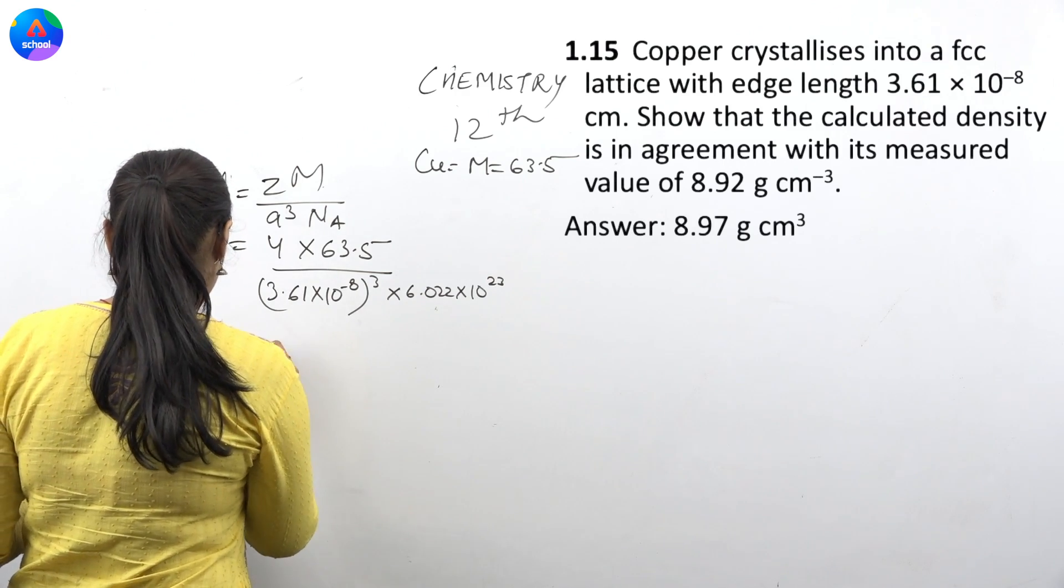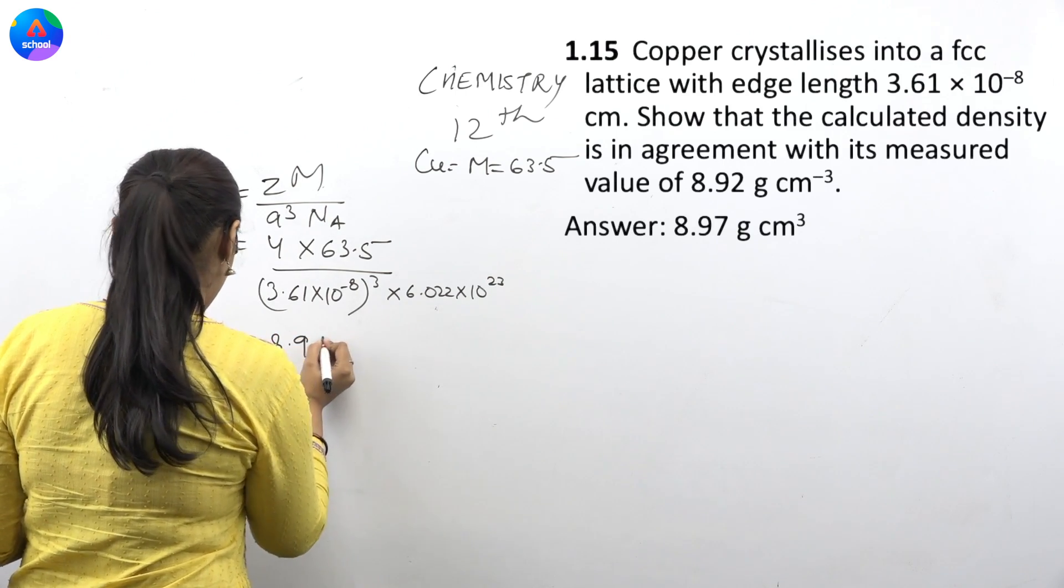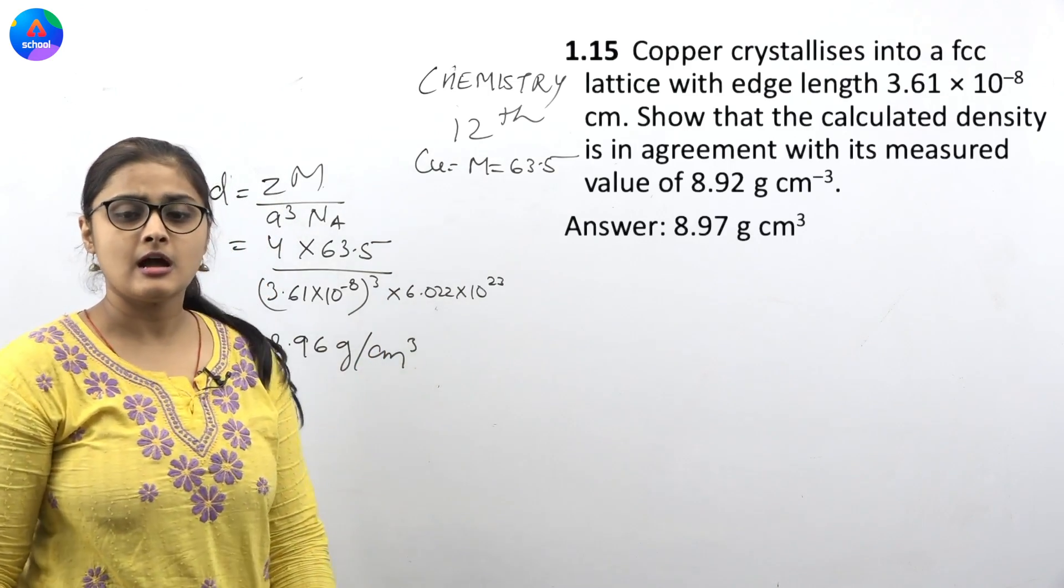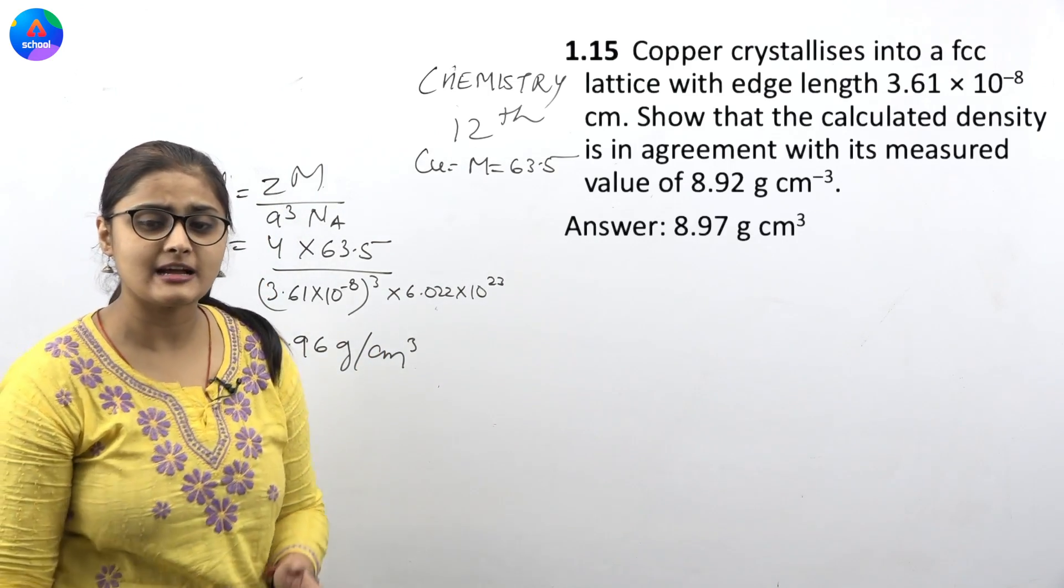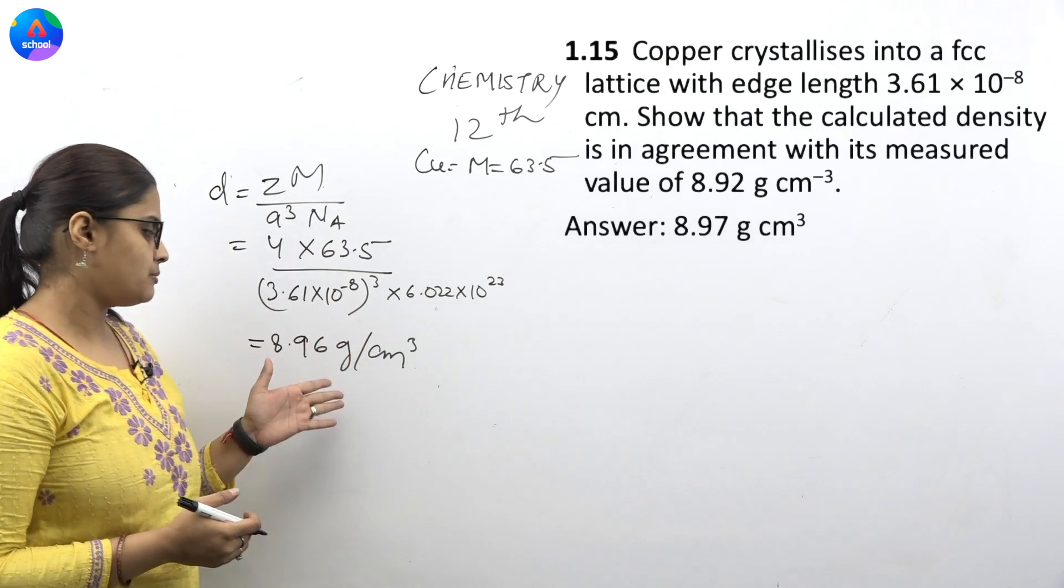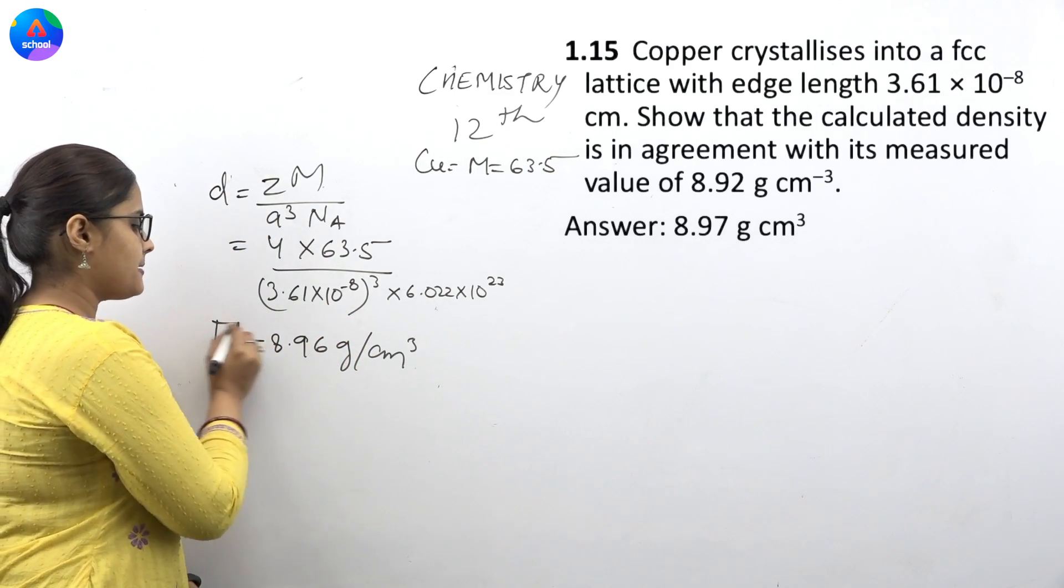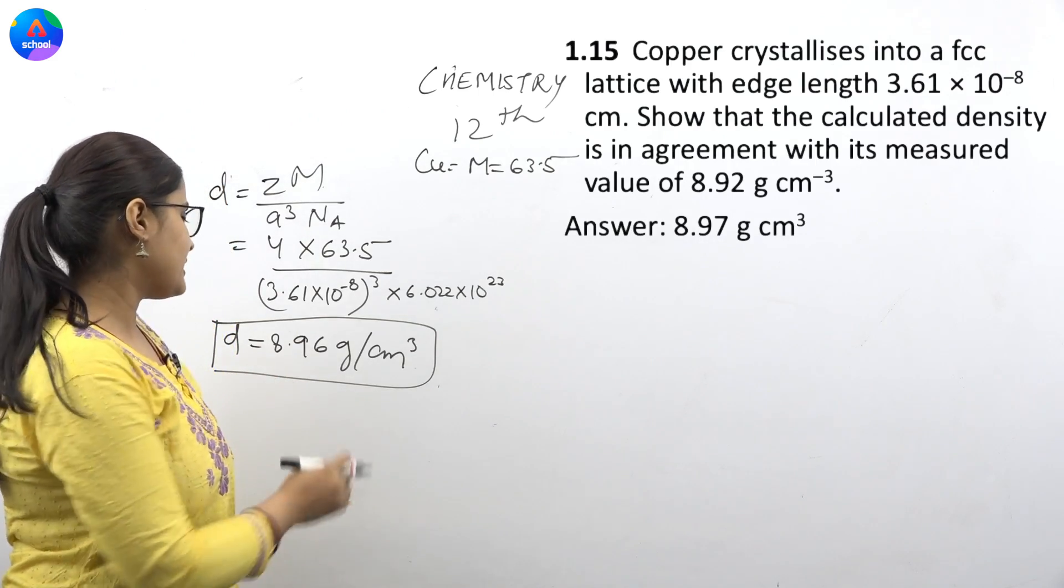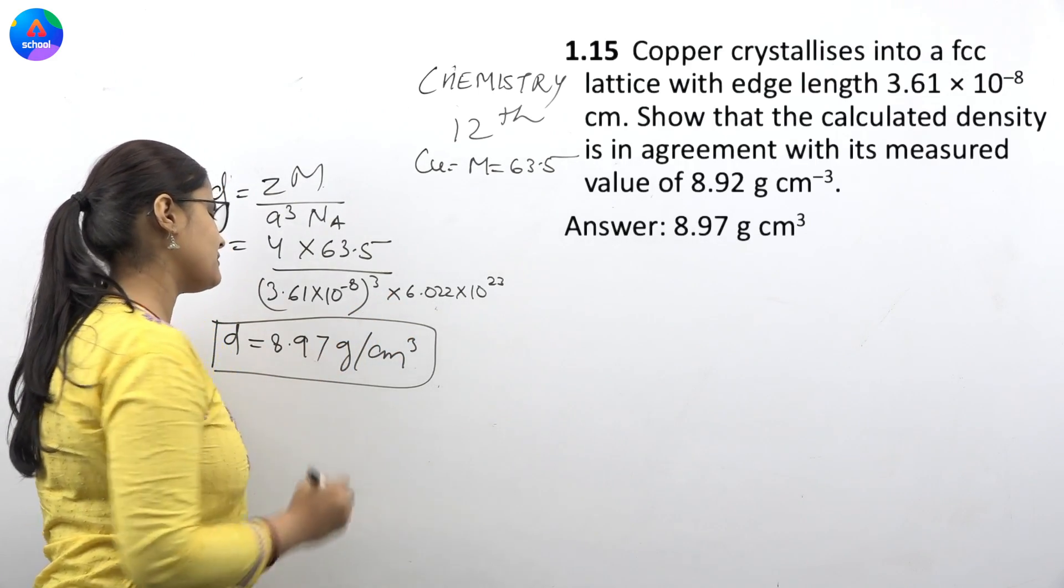Now, if we solve this, we will get 8.96 gram per centimeter cube. Now, take care of your question. It has written that show that the calculated density is in agreement. So it is absolutely in agreement. Brother, I gave it 8.92 and our answer is 8.96 or 8.97. So this is how much happened.